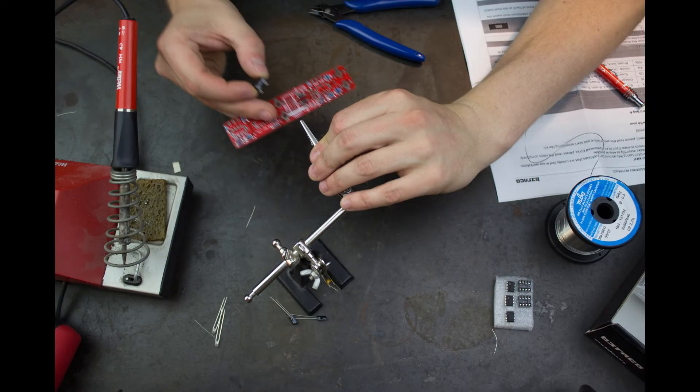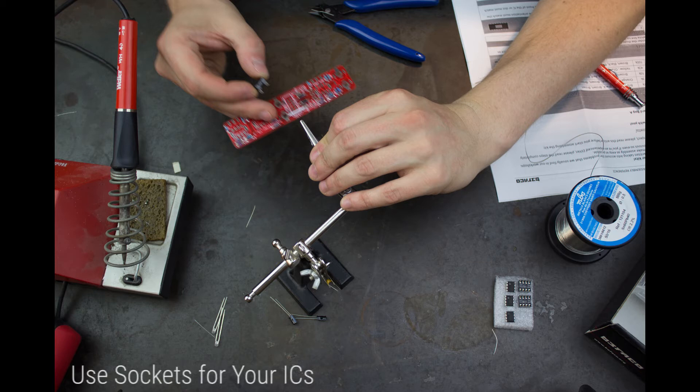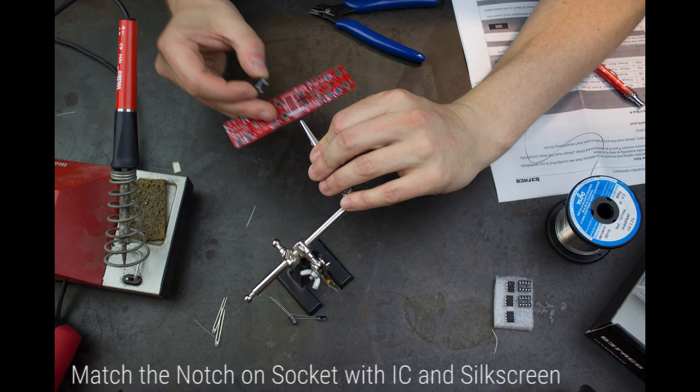Rather than solder the ICs directly, which may damage the sensitive internals and make replacing them extremely difficult, we use sockets. It may be hard to see, but on one end of the sockets there is a little notch cut out of it. This corresponds to the end of the IC where we will find leg 1.